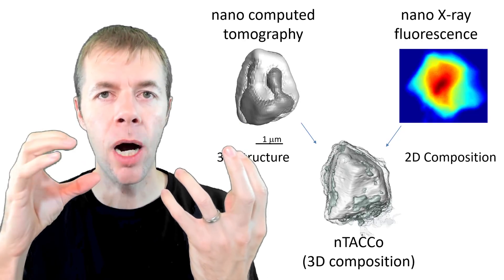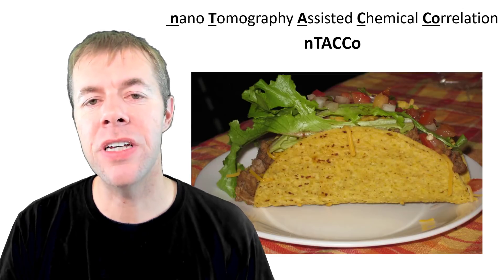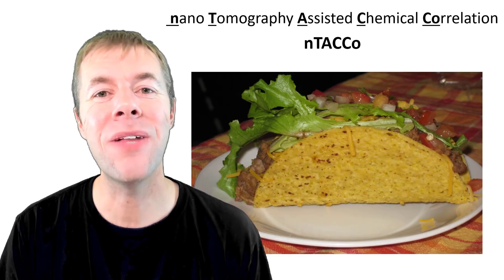Now, what we're going to do is combine the 3D tomography with the 2D composition together to get a 3D composition. And this technique is called nano taco. Nano tomography assisted chemical correlation, or nano taco. And when you develop something like we did at Oklahoma State, you can name it anything you want. And we love tacos. So we called it nano taco.